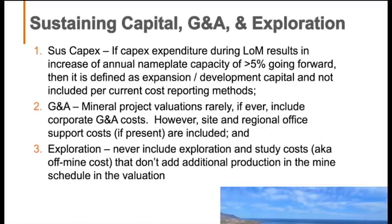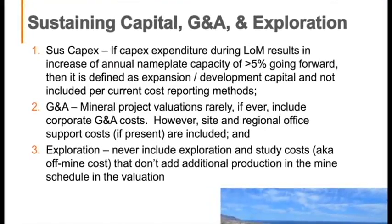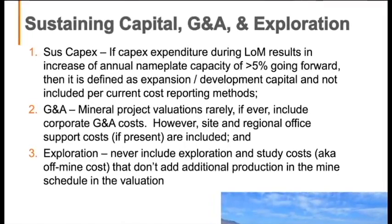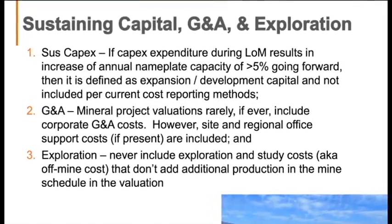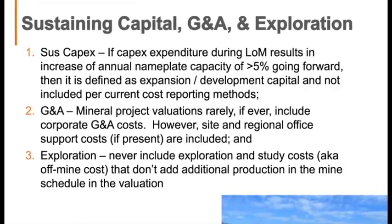With sustaining capex, our rule of thumb is: if the capital expenditure increases nameplate capacity by more than 5%, then that's development capital, not sustaining. With G&A, when you do a project valuation you're not including corporate G&A, though if a project has a regional office — say a Newmont mine operations HOFO — that regional office cost should be included. For exploration, if you're spending money that is not producing the ounces in your business case, take them off as off-mine costs.